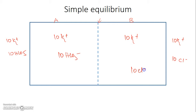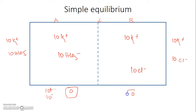When we add them initially, both the sides are electrically neutral — that is, the number of positive ions on both sides is equal to the number of negative ions. Here we have 10 positive and 10 negative, so net charge is zero; and similarly, 10 positive and 10 negative, net charge is zero here.